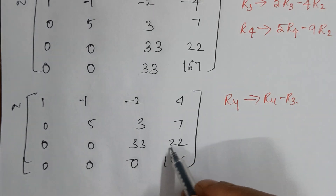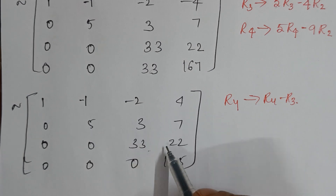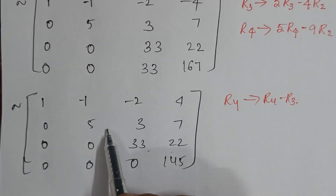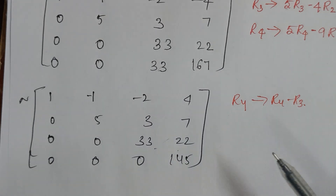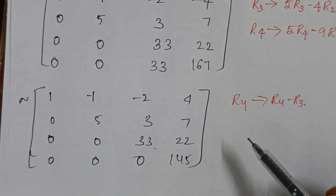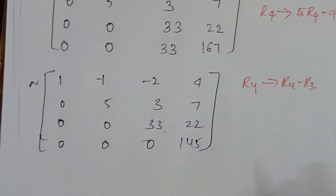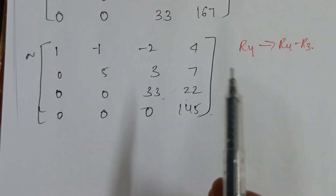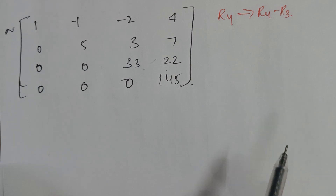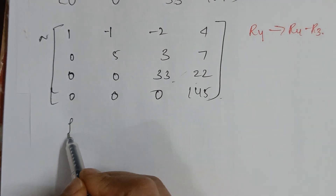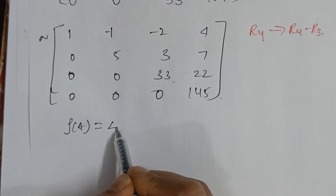You could divide row 3 by 33 and row 2 by 5, but you'd get fractions, so it's better to keep it as is. The optional simplification won't change the result. The rank of matrix A is 3... actually, we have three non-zero rows, so the rank of matrix A is 3.